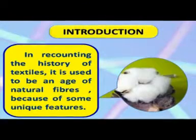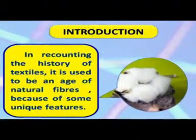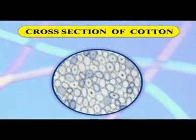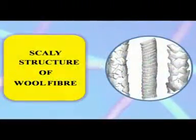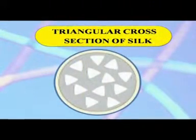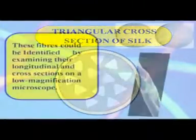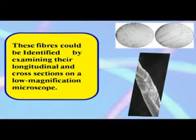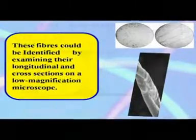In recounting the history of textiles, it used to be an age of natural fibers because of some unique features like the cross-section of cotton, the scaly structure of wool fiber, the triangular cross-section of silk, etc. These fibers could be identified by examining their longitudinal and cross-sections on a low magnification microscope.